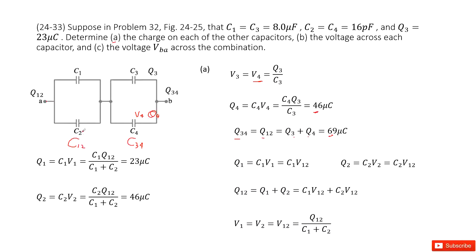Now we have the charge for C12, and we need to find Q1 and Q2. Since C1 and C2 are in parallel, the potential difference V1 equals V2, and both equal V12. So the charge Q1 equals C1 times V1, and similarly Q2 equals C2 times V12.